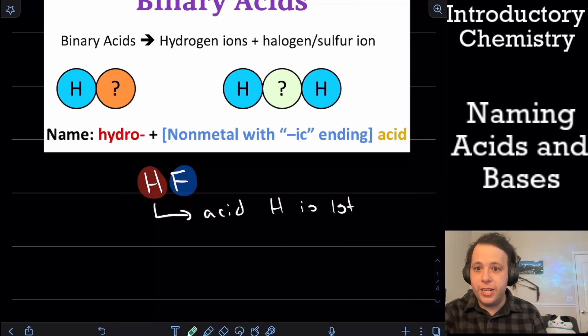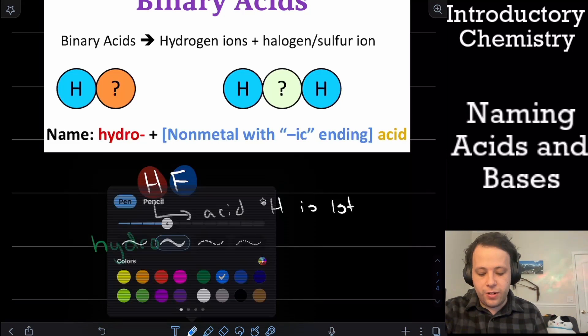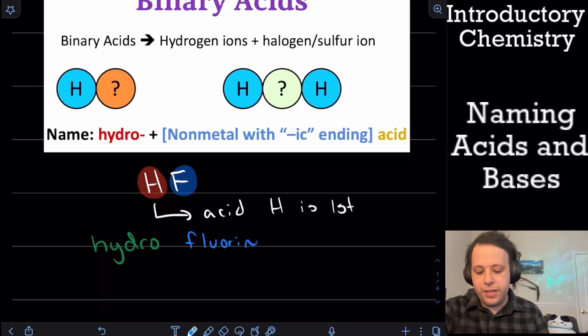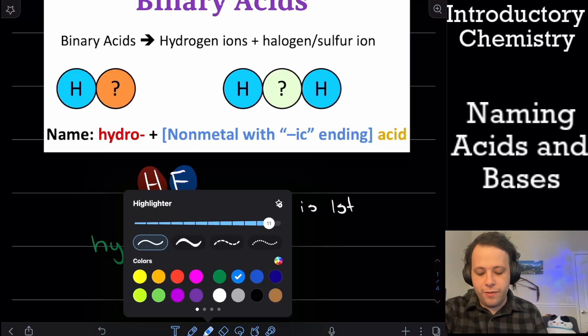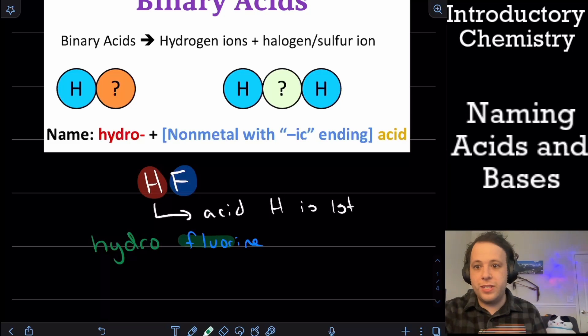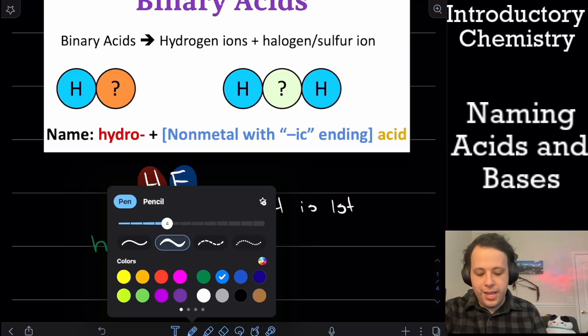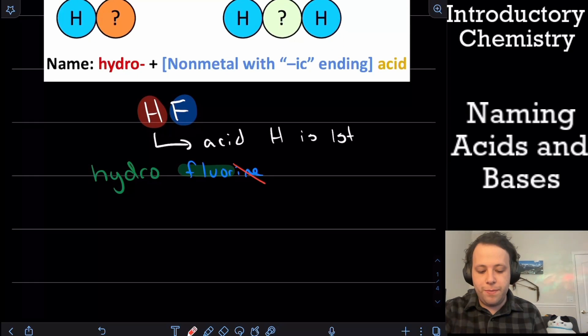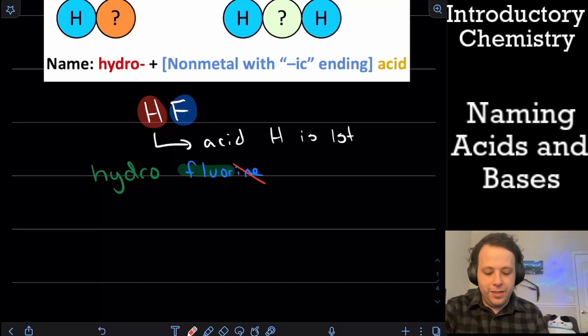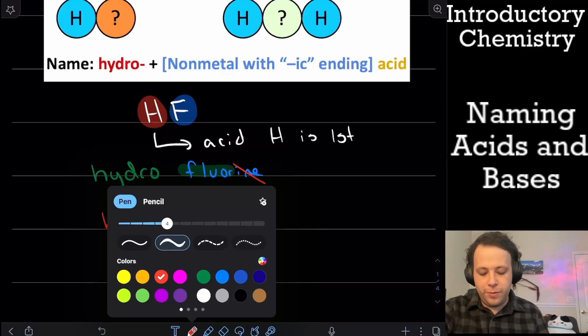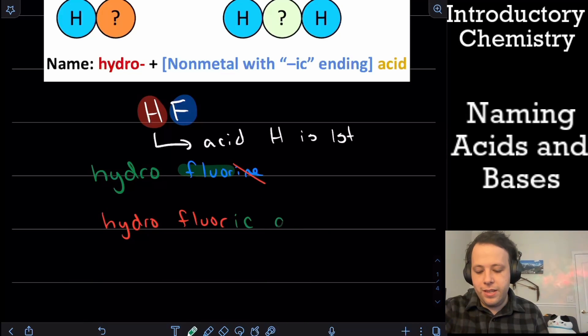in order to name it, the first thing we're going to do is for hydrogen, we're going to write hydro. And being that it is an acid, it's going to have a different ending. So we have fluorine, which is our element here. But what we're going to do, we're only going to keep the first syllable. So we're going to keep fluor. So it's fluor and then ine. So that ending part is going to be dropped as a result. And that's going to be replaced with ic acid.